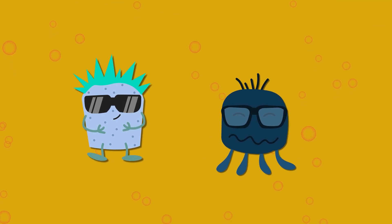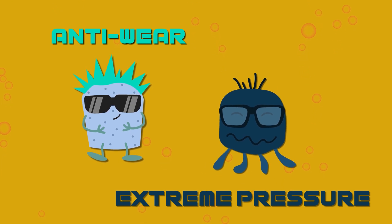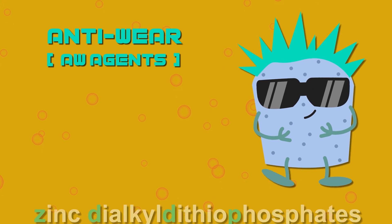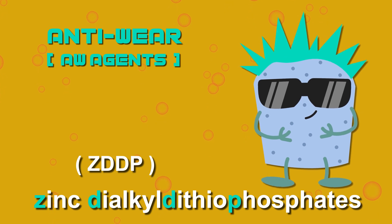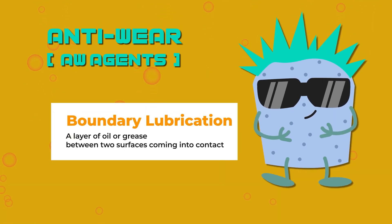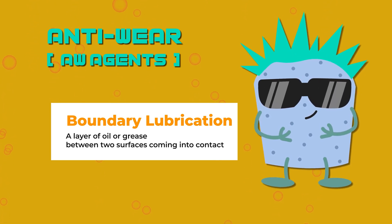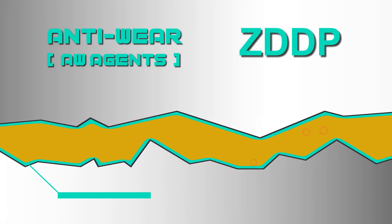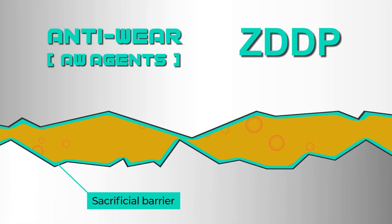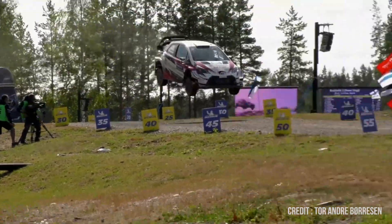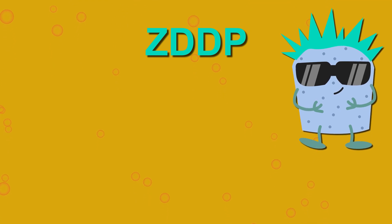Now, we should talk about anti-wear and extreme pressure additives, since they can easily be confused for one another as their jobs are pretty similar. Anti-wear or AW agents usually use zinc dialkyl diethyl phosphates — ZDDPs — to prevent excessive wear through metal-to-metal contact in the boundary or mixed lubrication regime. Boundary lubrication is when oil or grease creates a layer or border between two surfaces coming into contact. ZDDPs work by adhering to the metal surface and act as a sacrificial barrier to any potential wear. They also help to protect the base oil from oxidation and the metal from damage by corrosive acids. Race cars or antique vehicles that have not been upgraded to modern standards require engine oil with extra ZDDP as they must endure intense wear and severe driving conditions.